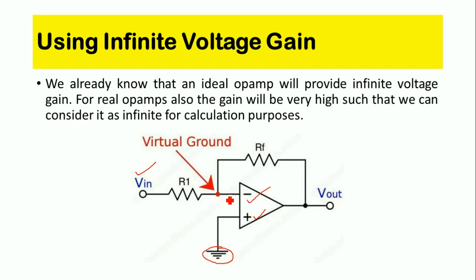I am not explaining the full circuit operation here — I am just going to explain how virtual ground exists in the operational amplifier. We already know that an ideal op-amp provides infinite voltage gain. For real op-amps also, the gain is very high such that we can consider it as infinite for calculation purposes. So for an ideal op-amp the voltage gain is infinite.